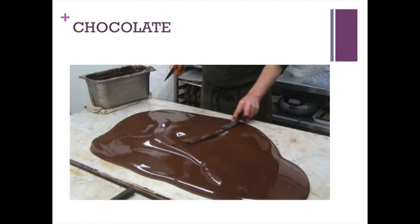The process of tempering chocolate involves the formation of beta-5 crystals in particular, because these crystals give the correct taste, look, and snap of amazing chocolate. To form these crystals, the cocoa butter — which is the source of fat in chocolate — will crystallize into one of six forms.